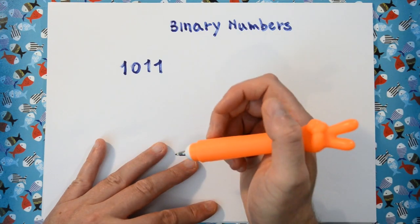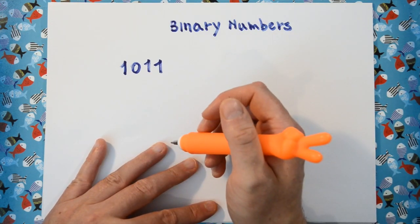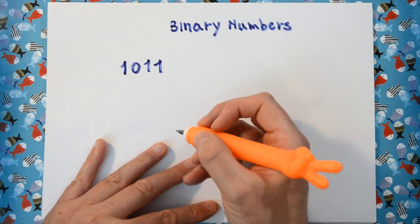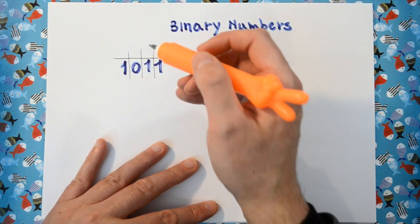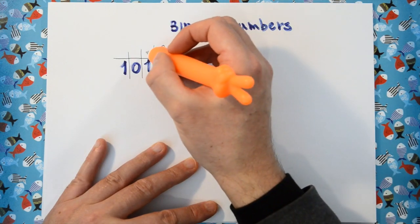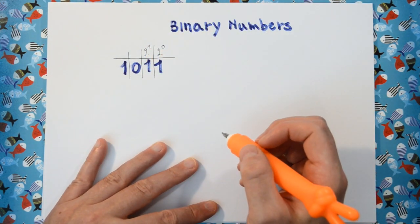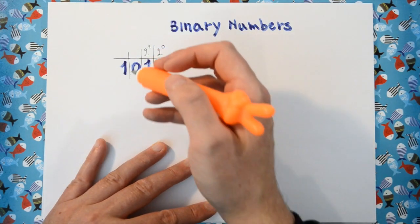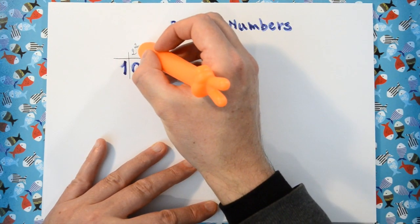Now in binary numbers, the first bit is a representation of how many times 2 to the power 0 we have. The second bit tells us how many times 2 to the power 1 there is. The third bit being 0 here is the amount of times we have 2 to the power 2.